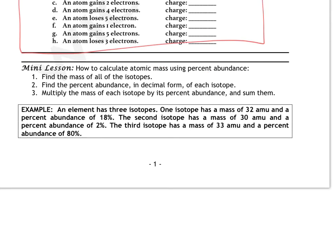All right, now here's an example. An element has three isotopes. One isotope has a mass of 32 amu and a percent abundance of 18%. The second isotope has a mass of 30 amu and a percent abundance of 2%. The third isotope has a mass of 33 amu and a percent abundance of 80%. Keep those numbers in mind. I'm going to flip to the next page.